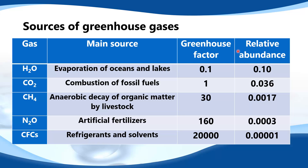But if we take into account the relative abundance, you can see that water has a far higher relative abundance than the CFCs. So when we are discussing the significance of the greenhouse gases on global warming, we can say that water and carbon dioxide are significant due to their relative abundance, whereas methane, N2O and the CFCs are significant because of their greenhouse factor.